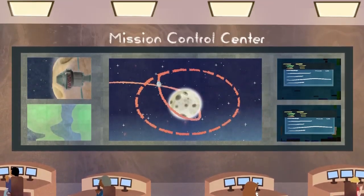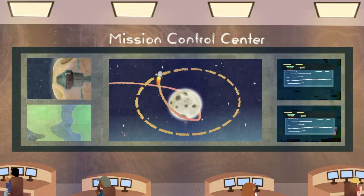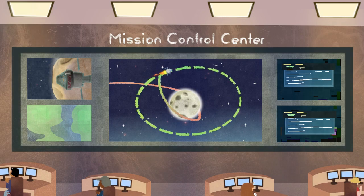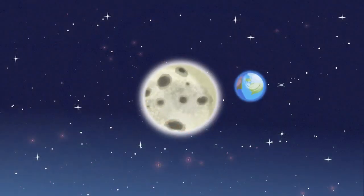Mission controllers precisely fire the service module's engines, aiming for the exact altitude or height of a distant retrograde orbit.